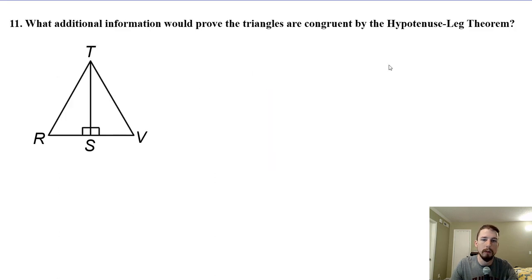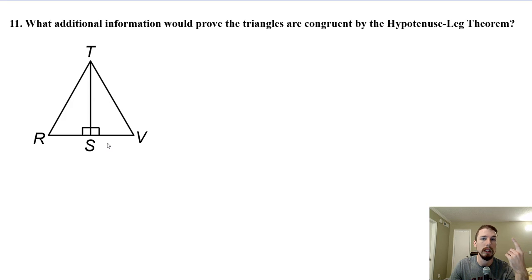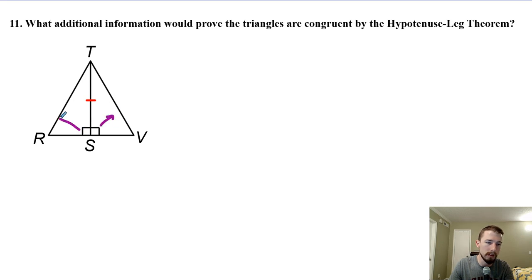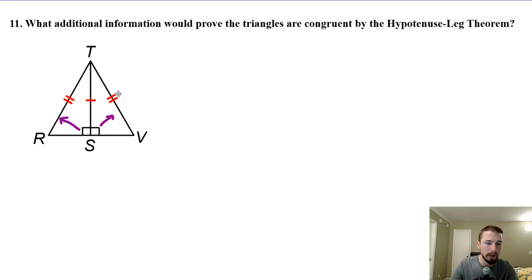Number 11: what additional information would prove the triangles congruent by the hypotenuse-leg theorem? We already have a right angle — that's good. Now we need a leg and a hypotenuse. TS is already going to be congruent to itself by the reflexive property, and that's a leg — one of the shorter sides. So the only thing we're missing is a side opposite of the right angle — that's our biggest side, our hypotenuse. We need to know that RT is congruent to TV. Then we'd have enough information to use the hypotenuse-leg theorem, because we have a right angle, a leg, and a hypotenuse.